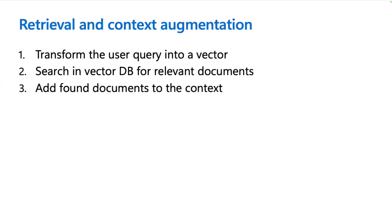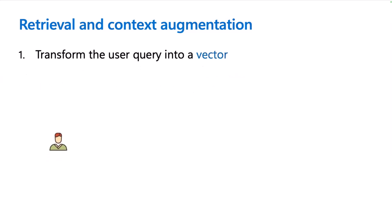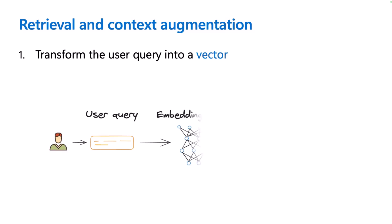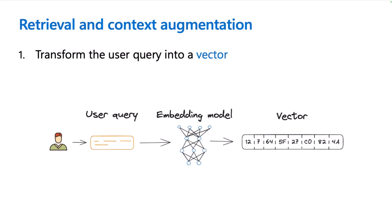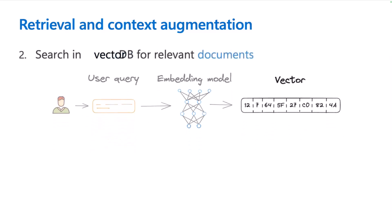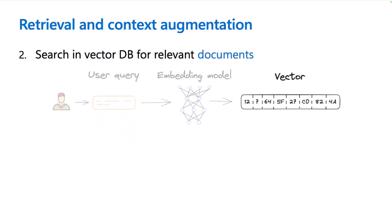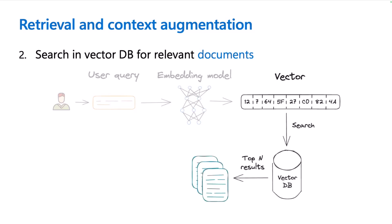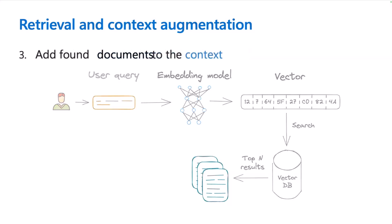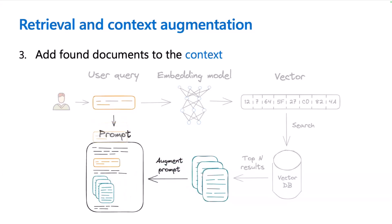Once you've built your knowledge base, you perform the retrieval and context augmentation process in three steps. First, we transform the user query into a vector by sending it to the same embedding model used when creating the knowledge base. Then we take that vector to perform a vector search in our vector database to pick up the best matching documents. Finally, we take the text from the most relevant documents as well as the initial user question, and use all of that to create a prompt — something like 'answer the user's question using the provided documents' — then send the prompt to the LLM to get your answer.